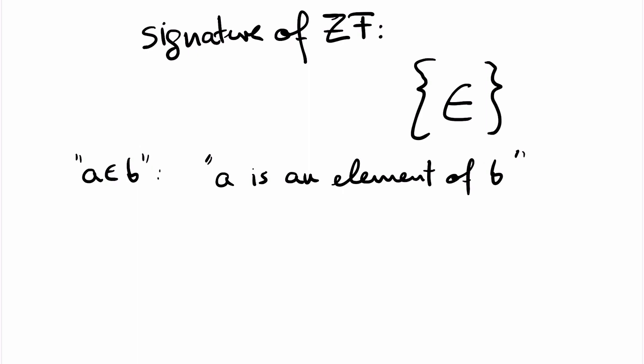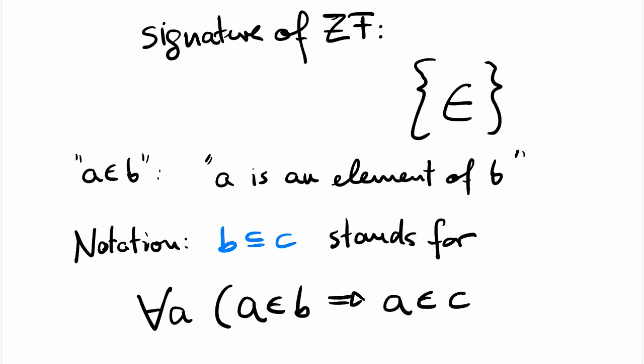Now we can start writing down the properties that we expect from this relation. For better readability I introduce some intuitive and well-known shortcuts. For example, we write b subset c for the first-order formula that says for all a, if a is an element of b, then a is an element of c. So all elements of b are elements of c. I will now present the Zermelo-Fraenkel axioms, abbreviated by ZF. This is a theory in the signature that I just presented.